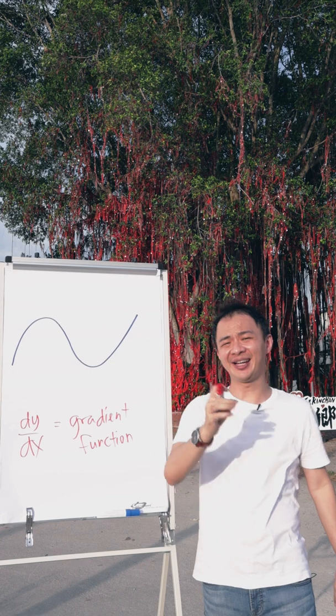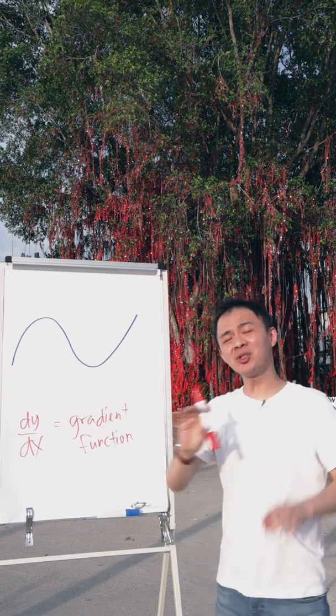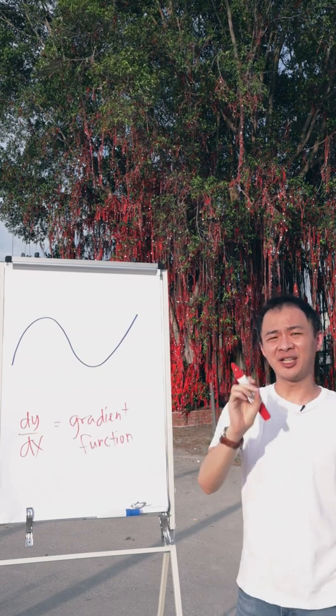Basically it means gradient of any line, can be curved, can be straight line. So most of the time in SPM, when you see dy/dx, you use it to find the gradient of the curve.